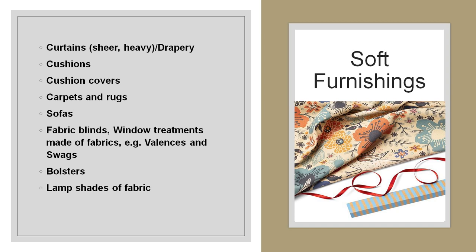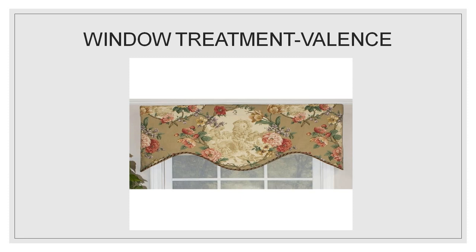The next classification is soft furnishings. Soft furnishings include curtains, cushions, cushion covers, carpets and rugs, sofas, fabric blinds, window treatments, bolsters, and lamp shades. Soft furnishings is a term referring to curtains, furnishings, and other coverings made of cloth used to decorate a guest room. Here, a picture of a valance is shown — a window treatment which is part of soft furnishings. Any treatment given to a window, including curtains, can be considered a window treatment.